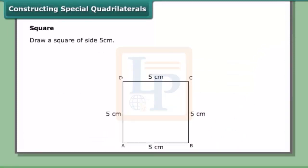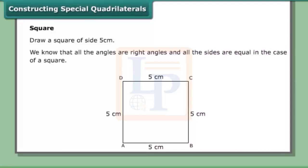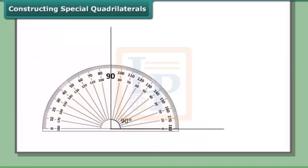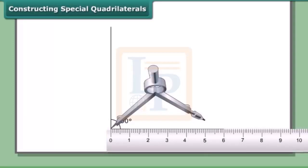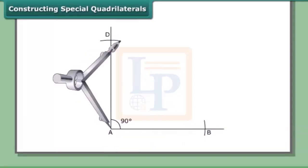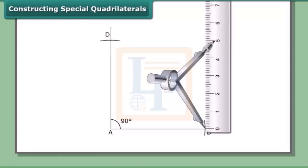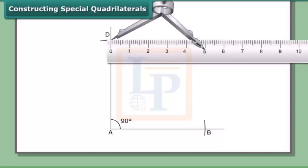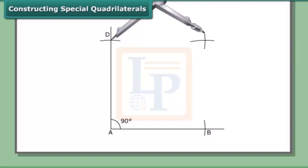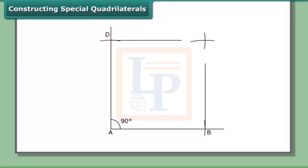Constructing a special quadrilateral — the square. Draw a square of side 5 cm. We know that all the angles are right angles and all the sides are equal in a square. Draw a right angle using a protractor or compass and ruler at point A. Set the compass to 5 cm and cut off sides AB and AD along the arms of the right angle. With B and D as centers and the same radius, draw arcs to intersect at C. Join C to B and D to form the square. ABCD is the required square.